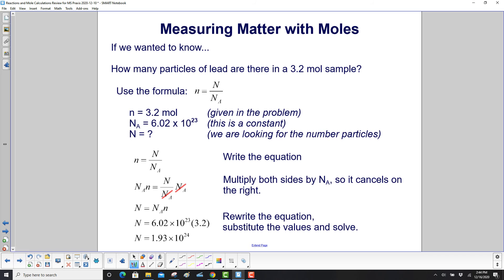Now we'd like to know how many particles of lead there are in a 3.2 mole sample. Once again, we have our equation. We have our given this time, 3.2 moles, Avogadro's number. And we'd like to find the number of particles. So you write the equation.